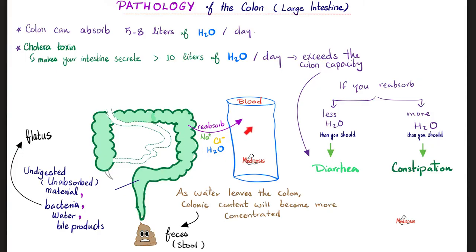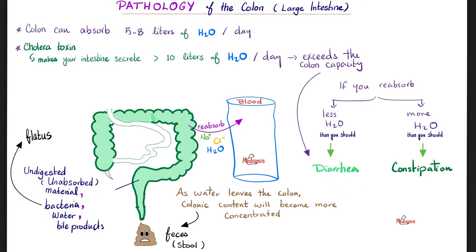Symptomatology of the colon: the colon should absorb water back to the blood. If you absorb less than you should, you end up with more water in the stool — diarrhea. If you absorb more than you should, your stool will be very hard — constipation with hard pellets. Your colon's capacity to absorb water is about 5 to 8 liters per day. However, cholera — a nasty gram-negative bacteria releasing toxins — makes your intestines secrete more than 10 liters per day, exceeding the colon's capacity, causing severe life-threatening diarrhea due to extracellular fluid volume depletion, lowering effective arterial blood volume and leading to hypoperfusion.